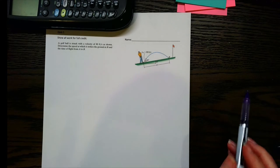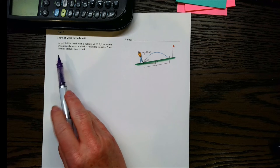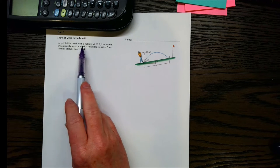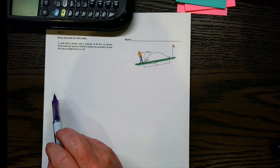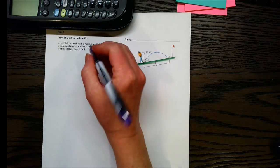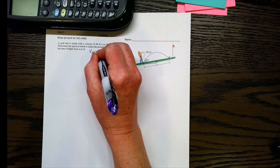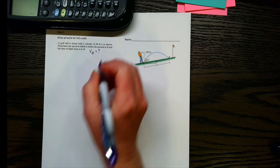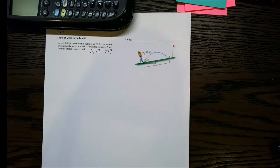Let's look at the solution to this one. So on this problem, let's read the problem statement first. It says a golf ball is struck with a velocity of 80 feet per second as shown, and we want to find the speed at which it strikes the ground at B, so we want VB, and we want the time of flight from A to B, so we want that time.